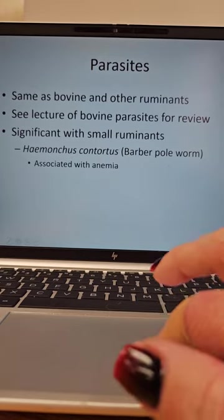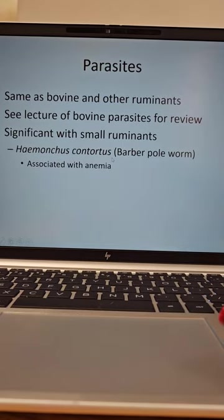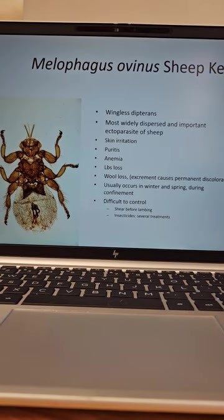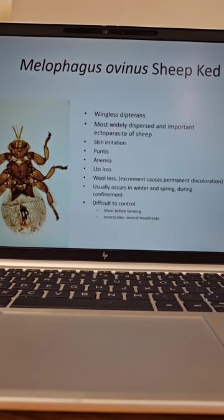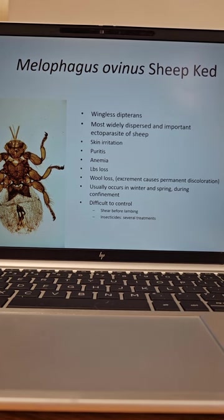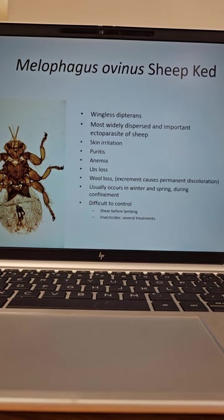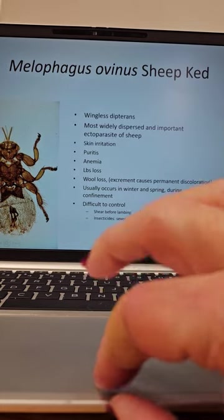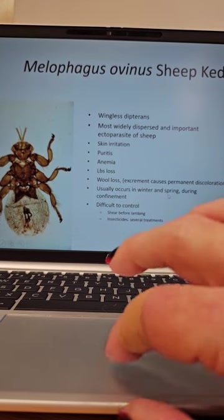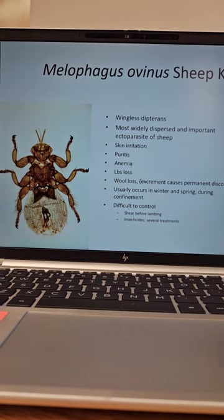Significant with small ruminants: you want to know about the barber pole worm, Haemonchus contortus. It is associated with anemia — get very familiar with that. Sheep ked — you need to know this one. This is the number one cause of economic loss in sheep. It does serious damage to the skin and the wool. They are wingless dipterans and the most widely dispersed and important ectoparasite of sheep. It causes skin irritation, pruritus (itchiness), anemia, weight loss, and wool loss. The excrement from the keds causes permanent discoloration of wool. It usually occurs in winter and spring when sheep are confined and they are difficult to control. You want to shear moms and shear sheep before lambing so it doesn't pass to the lambs.